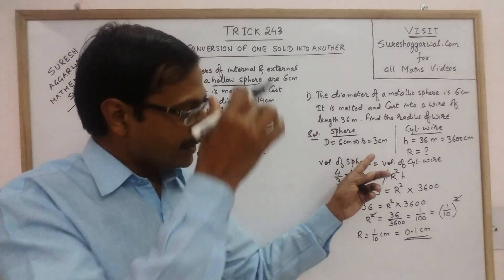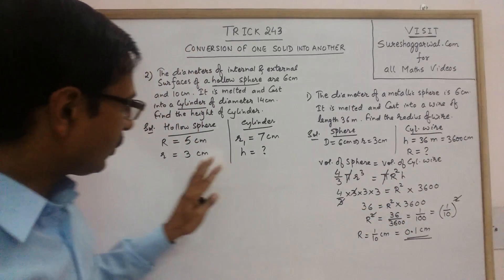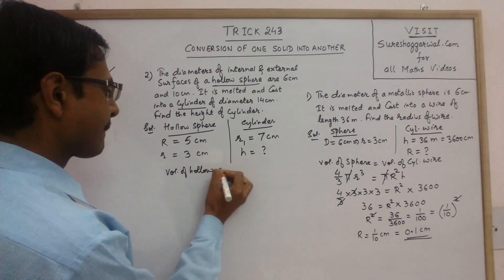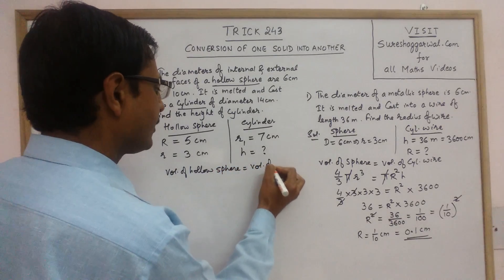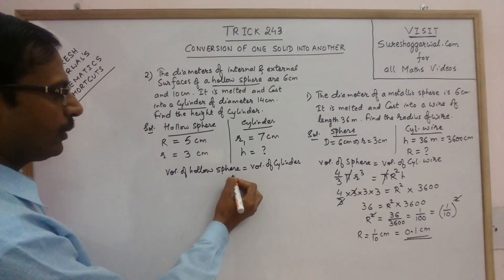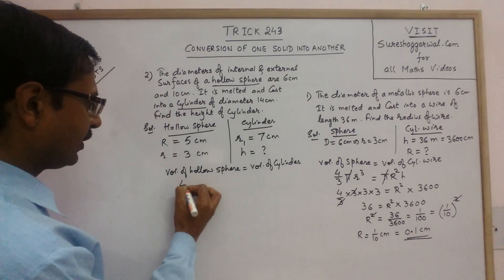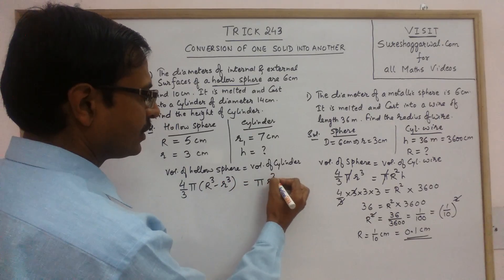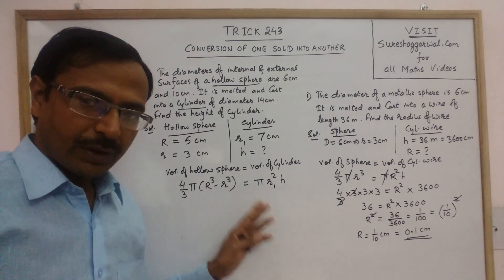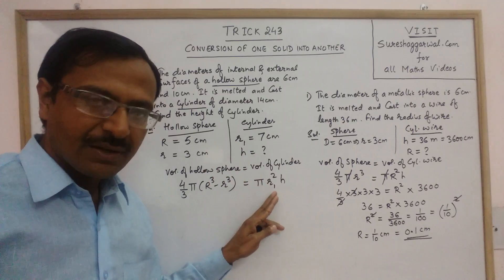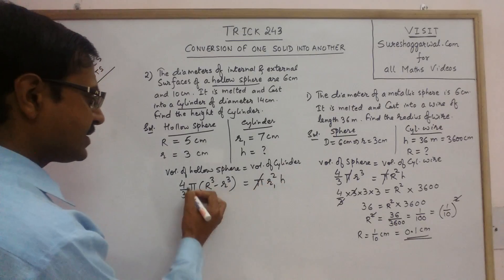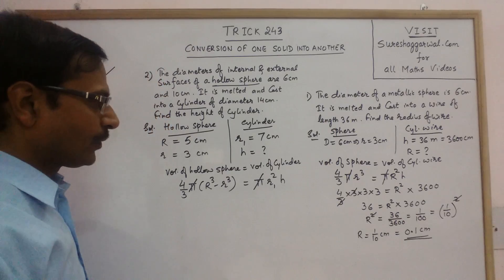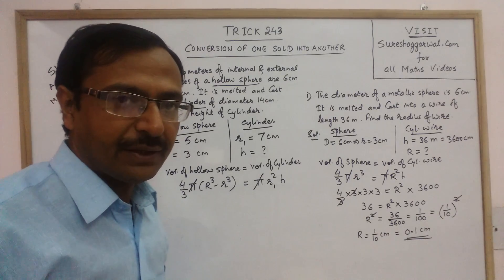Again, all dimensions except one are given, and we have to find the height of the cylinder. Equate the volumes: volume of hollow sphere = volume of cylinder. The volume of a hollow sphere is the outer volume minus the inner volume: (4/3)π(R³ − r³) = πR1²h. Again π gets cancelled, which reduces half of our calculations — if we retain π and use it throughout, the calculations increase unnecessarily.